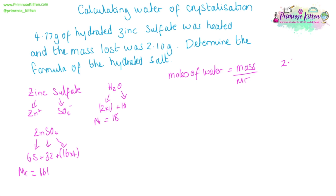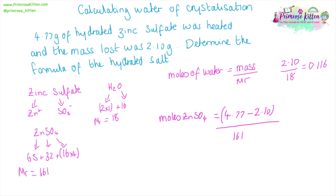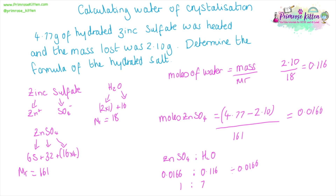We can now work out the moles of water: the mass loss is 2.1 grams ÷ 18 = 0.116 moles of water. The mass of the anhydrous salt is 4.77 minus 2.1, divided by the Mr of zinc sulfate, 161, giving 0.0166 moles. We then work out the ratio: 0.0166 to 0.116 — divide both by the smallest number, 0.0166. Zinc sulfate gives 1, and water gives approximately 7 when rounded. This gives the formula for the hydrated salt as ZnSO₄·7H₂O.